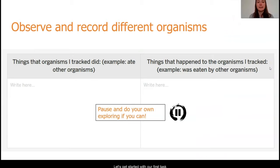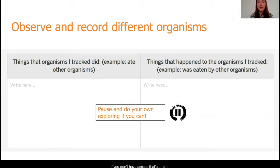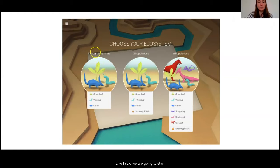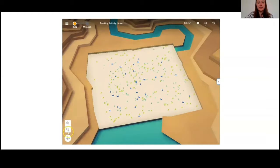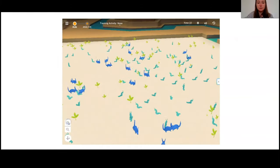Let's get started with our first task. To really understand why populations change, we need to understand what the individual organisms are doing in these populations. Open up the digital model and investigate what these different organisms are doing, and also what things are happening to them. If you have access, this would be a great time to pause the video and set up a data table on your paper just like mine. If you don't have access, that's alright — you can follow along with me while we look at the digital model together.